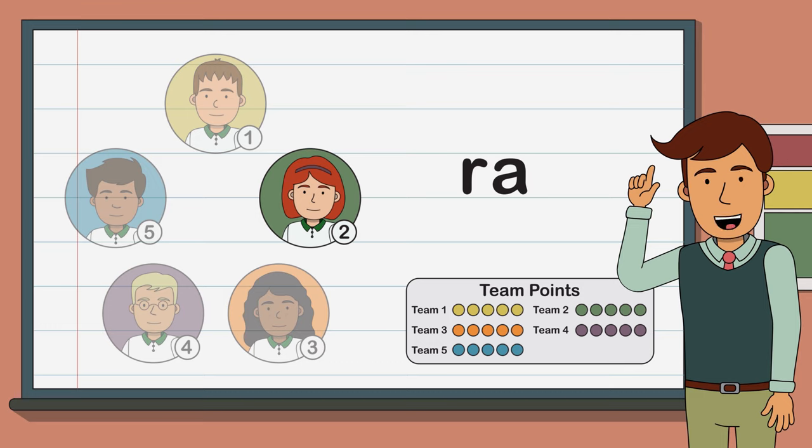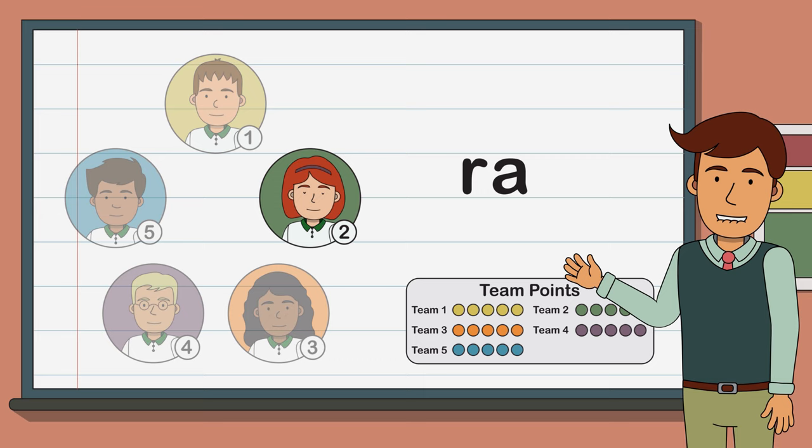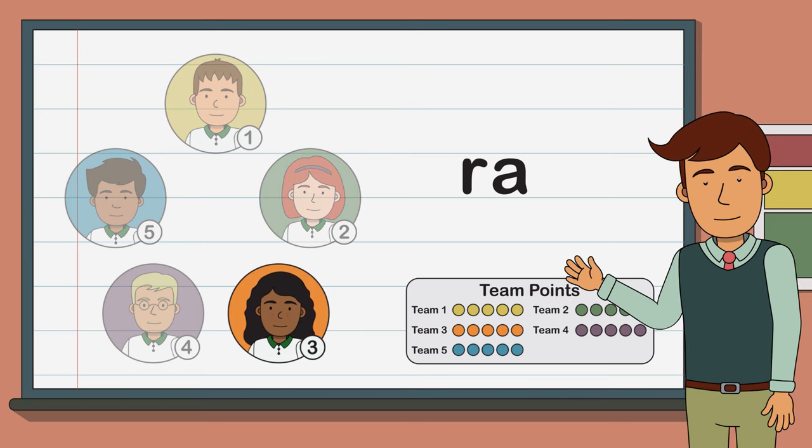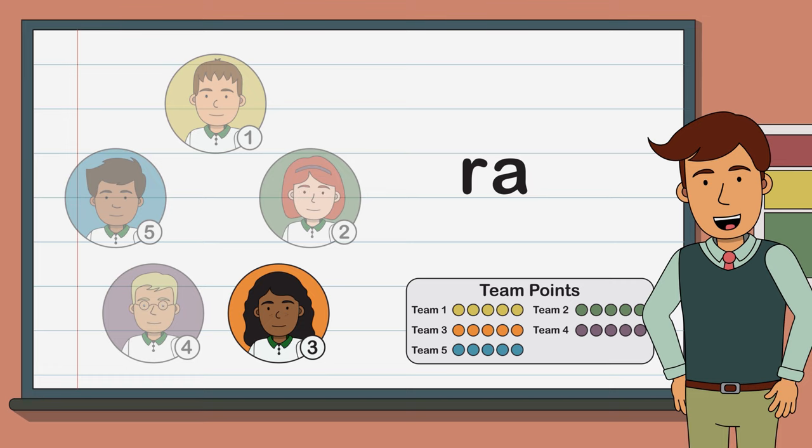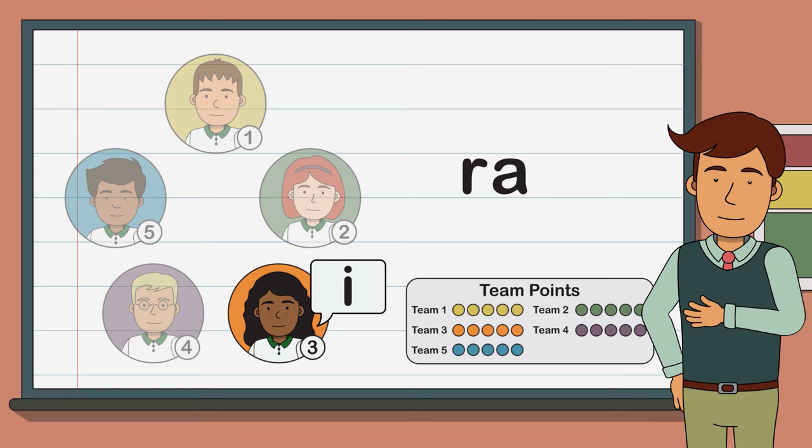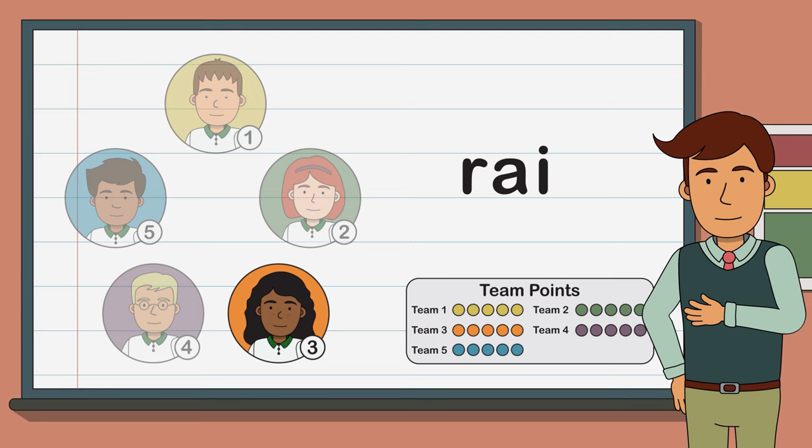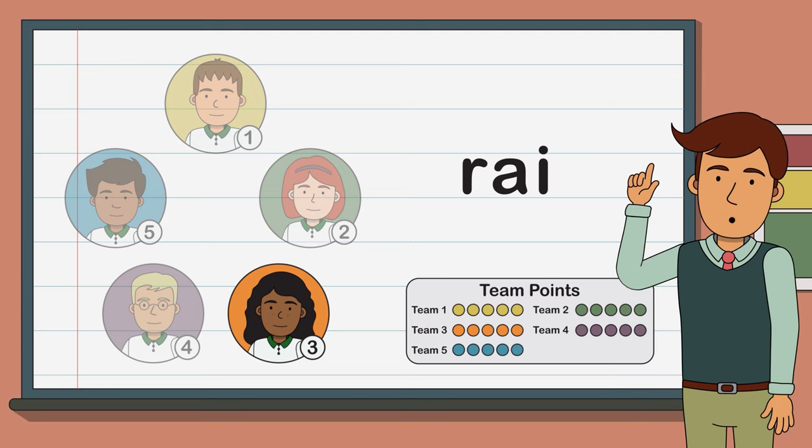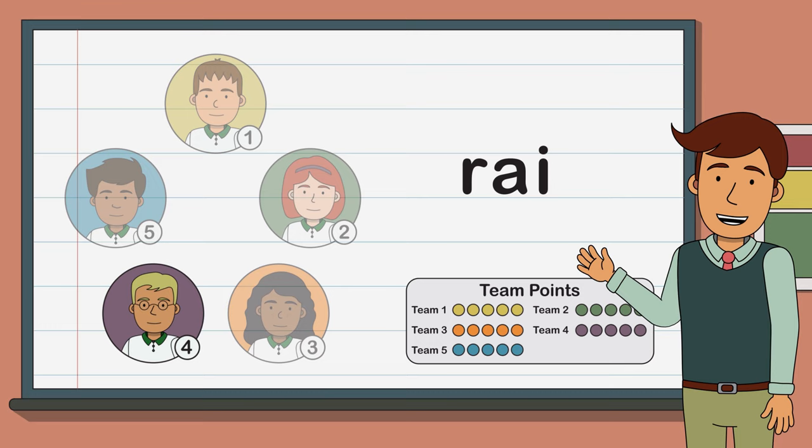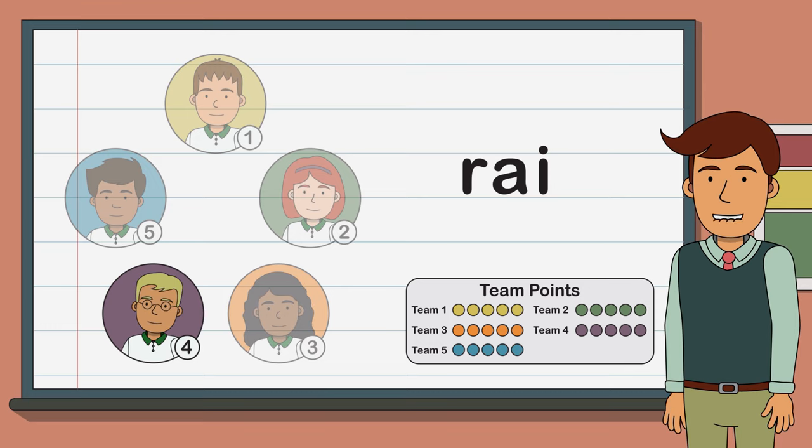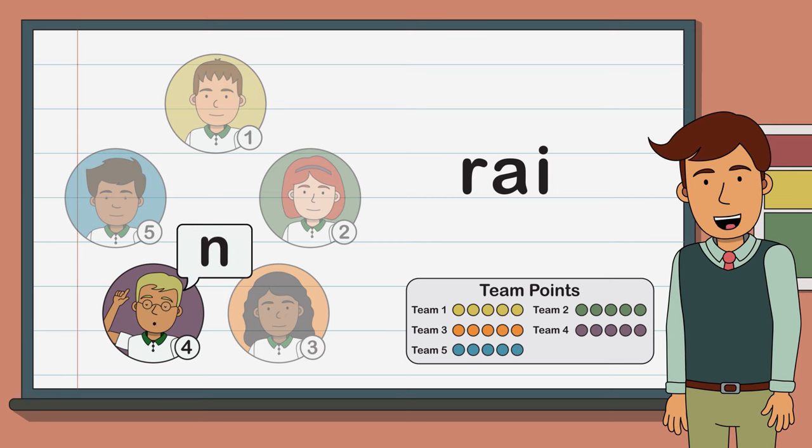Remember, the aim of the game is to keep the letters growing for as long as possible without being the team to finish a word. The captain from team three consults their teammates and they decide on the letter I. Now we have the letters R, A, I and we're getting close to finishing a word, so team four need to be careful. Without consulting their team, the captain from team four announces the letter N.